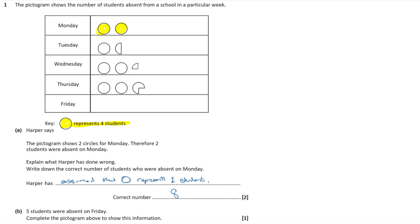Five students were absent on Friday. Complete the pictogram to show this information. Five is one whole circle — that represents four students — and we need a quarter of one more. So I'm going to draw one whole circle and a quarter circle next to it, like the example shown. So there's my quarter circle. It's not perfect, but it's good enough.